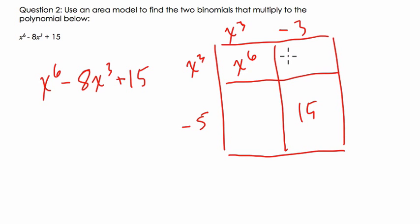Negative 3 times x to the 3rd is negative 3x to the 3rd, and negative 5 times x to the 3rd is negative 5x to the 3rd. Why is that important?